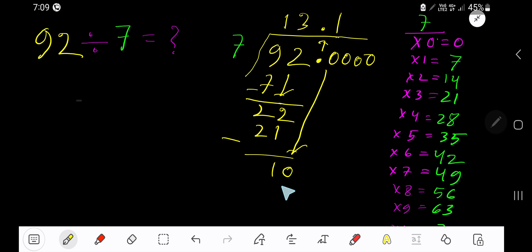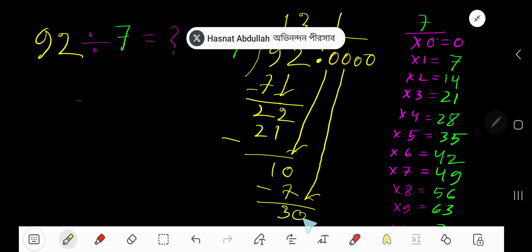1 times 7 is 7. Subtract: 3. So bring down another 0: 30.